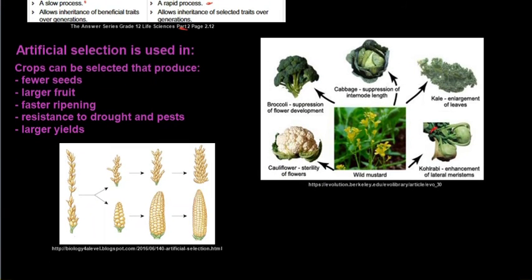Now we also get artificial selection in crops, specifically for fewer seeds. I'm talking about seedless grapes, seedless oranges, so it's not a hassle for us so that we have to remove the seeds and so on when we are eating these fruits, as an example. Larger fruit, faster ripening, resistance to pests and drought, and then larger yields.